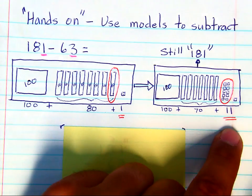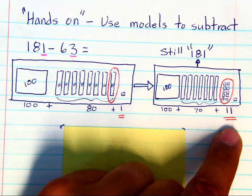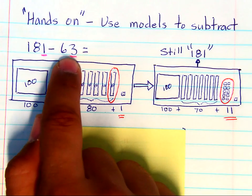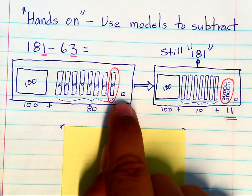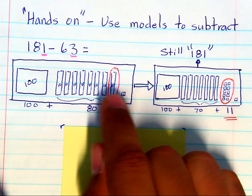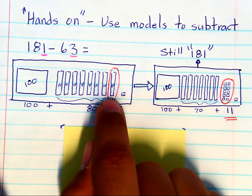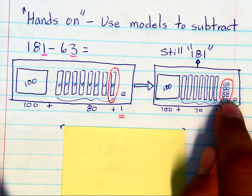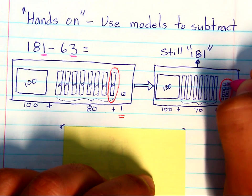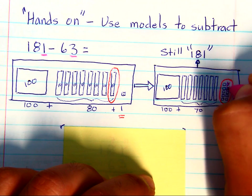Now being able to do this hands-on is really important, because when you have to take 63 away, you have to take 3 ones, but you don't have 3 ones to take. So you have to take 1 of the tens and break it into ones in order to remove 3 of these ones.